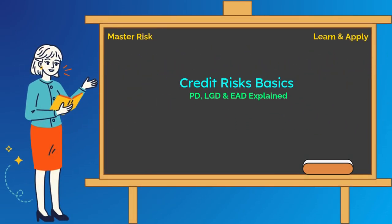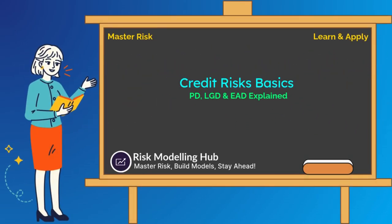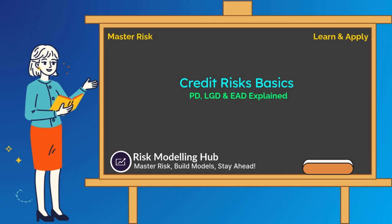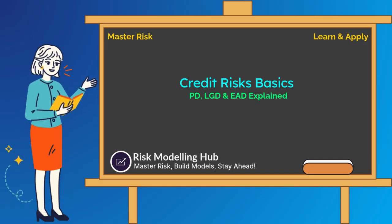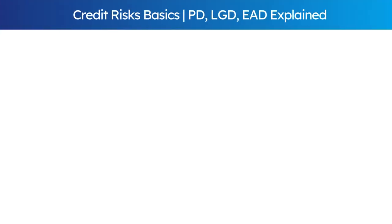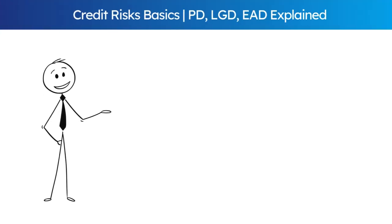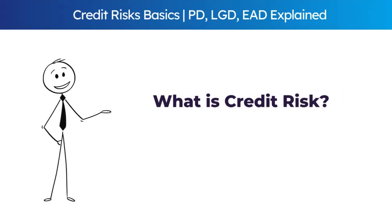In today's video, we will break down the three pillars of credit risk: probability of default, loss given default, and exposure at default. Before diving into these components, let's first understand credit risk.